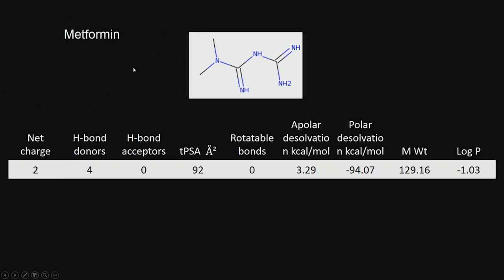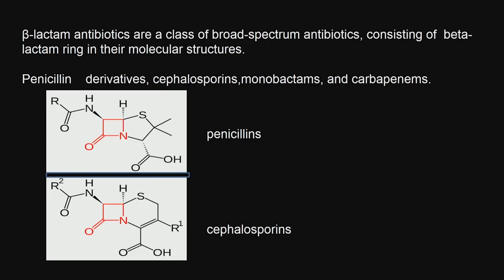Metformin is used for diabetes. A lot of properties of metformin are given here, and we will spend more time on them later. Now look at these — antibiotics called beta-lactam antibiotics. These are broad-spectrum antibiotics, highly available in the market. Penicillin is one of the oldest antibiotics; it was given during World War II for soldiers who had infection.